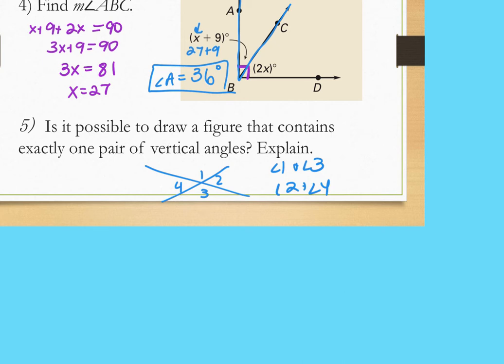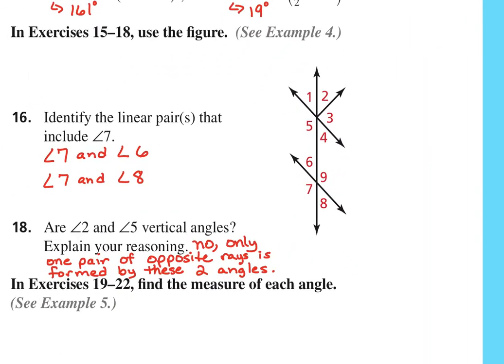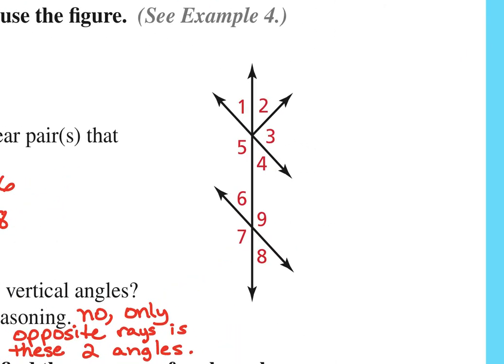A student asks about angles 2 and 5 being vertical. Teacher explains that if you extend the sides of angle 2, the vertical pair would be with a different angle, not angle 5 which is bigger. The only vertical angles in this diagram are 9 and 7, 6 and 8, and 4 and 1. Angles 2 and 5, or 3 and 5, are not vertical pairs. You can't cut out part of the diagram unless it's literally drawn that way.